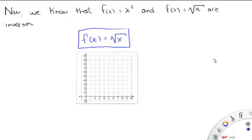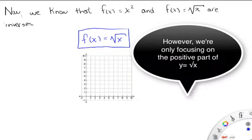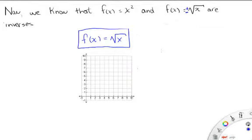Remember that f(x) equals x squared and f(x) equals square root of x are inverses. Now we know that these two guys are inverses. What happened with mathematicians is they came up with this function and they decided to study it, so they knew what it looked like.